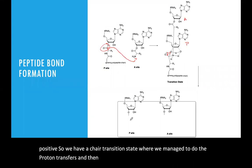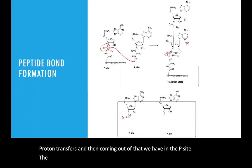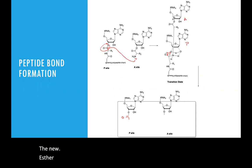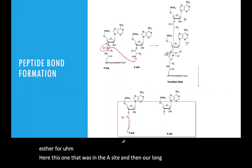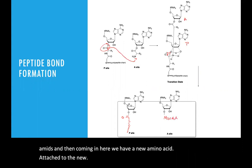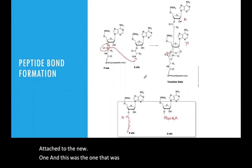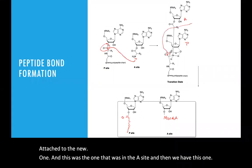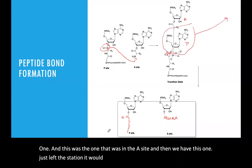Coming out of that, in the P site we have the new ester — the one that was in the A site — and then our long chain, which is all amides. Coming in here, we have a new amino acid attached to the new one, which was the one in the A site. And then this one just left the station — it went out and left the ribosome.